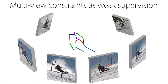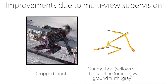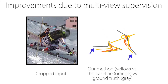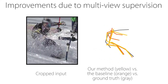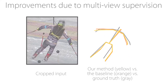In this paper, we propose to replace most of the annotations by the use of multiple views at training time only. Specifically, we train the system to predict the same pose in all views. Training with additional unsupervised data improves reconstruction in difficult cases not in the annotated training set, such as partial occlusion by snow and gate crossings, and extreme poses.